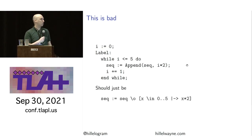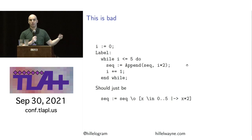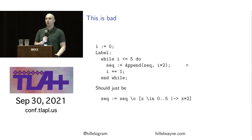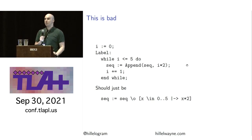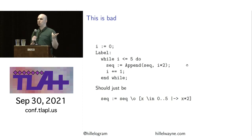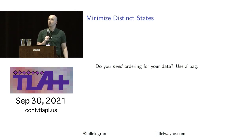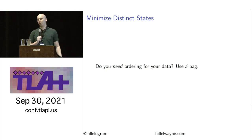Another case of unnecessary concurrency: when people need a multiset, they use a sequence, but a sequence introduces both duplication and ordering. If you do not need ordering but do need duplication, don't use a sequence — use a bag. That is the Bags module in TLA+. You can read about it in Specifying Systems, or write 'extends Bags,' hover over the bags thing and hit F3 to see the full implementation.